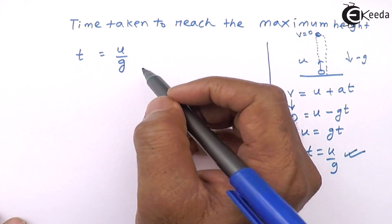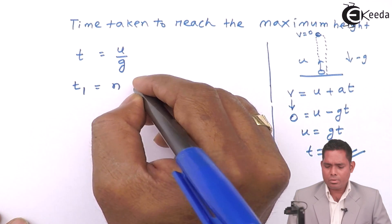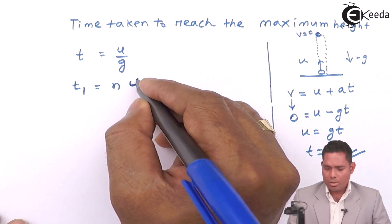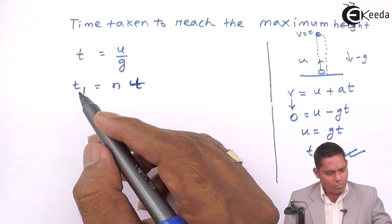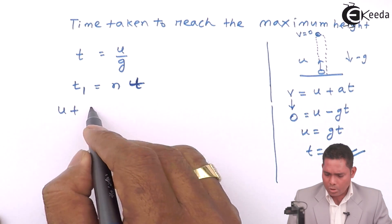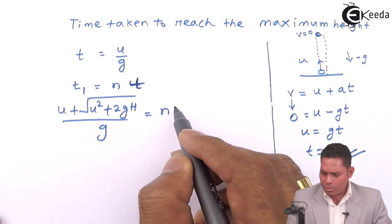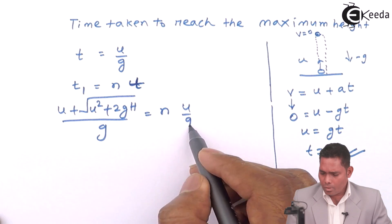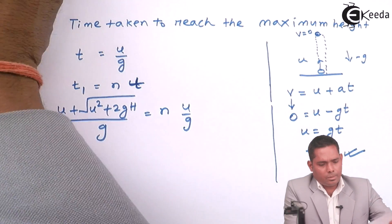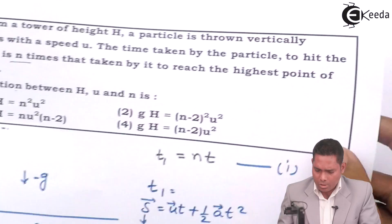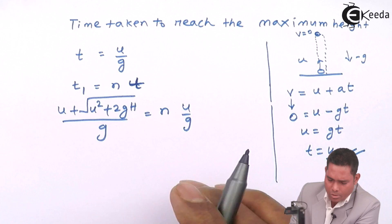Now I will substitute the values of t1 and t into the first equation. The equation is: t1 = n × t, meaning time of landing equals n times time to reach maximum height. Substituting: (u + √(u² + 2gh)) / g = n × (u/g).